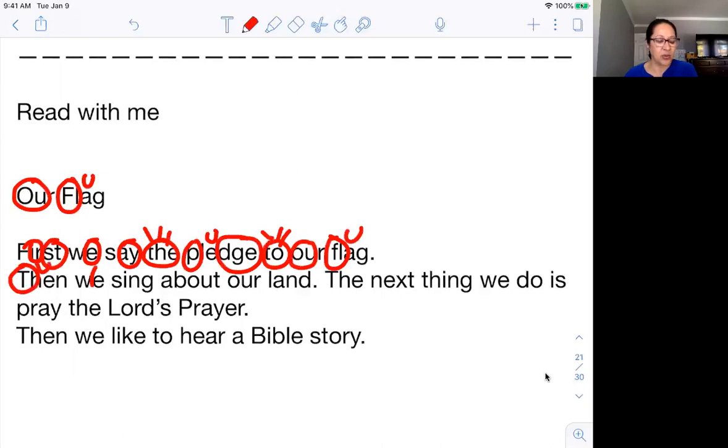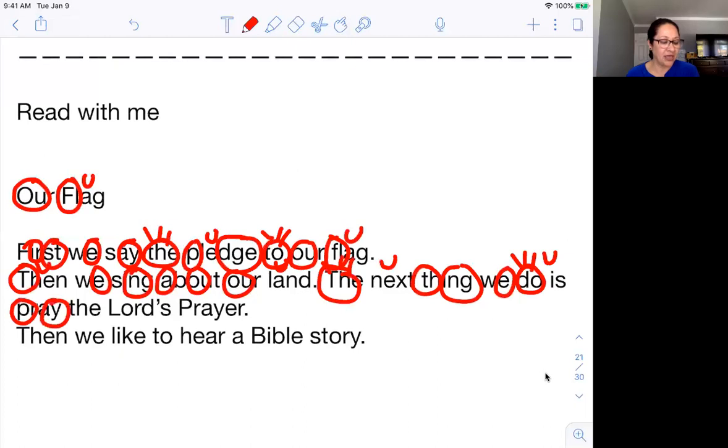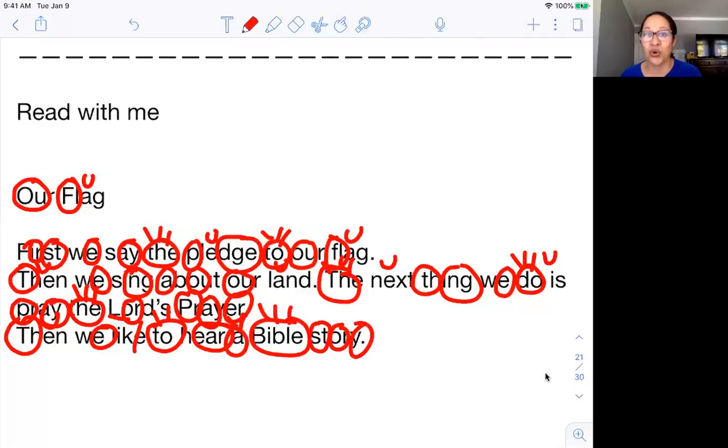First we say the pledge, J in fudge, D-G-E, to our flag. First we say our pledge to our flag. We do that, don't we boys and girls, in the morning. Then we sing about our land, right, we sing songs. And then the next thing, I-N-D in kind, we do, do is a sight word, is pray the Lord's prayer, right. Don't we pray in the morning? Yes we do. Then we like to hear, E-A-R in ear, a Bible, Bible is a sight word, story, story, S-T in stop, and then O-R in morning, O-R, and E in baby, Y.